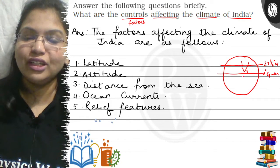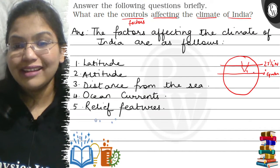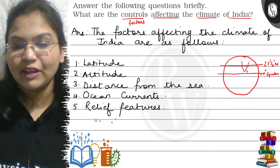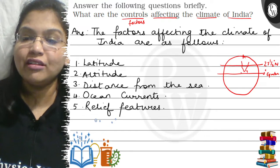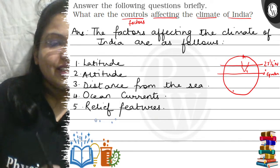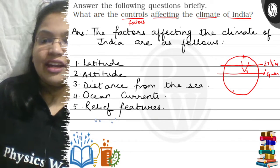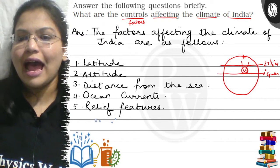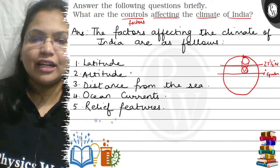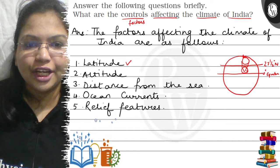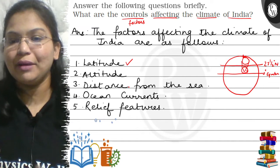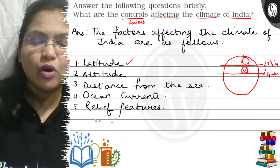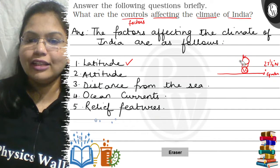The temperature changes as the latitude changes. As we move away from the equator towards the pole, the temperature changes. Because India's part lies in both zones, due to change in latitude the climate also changes as we go from south to north.